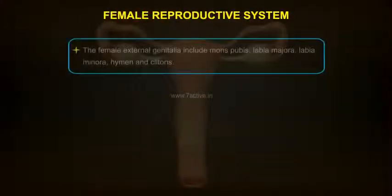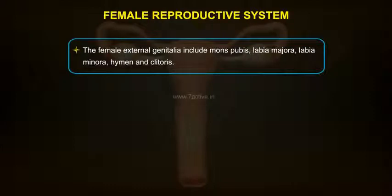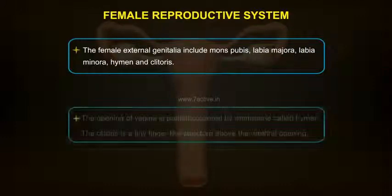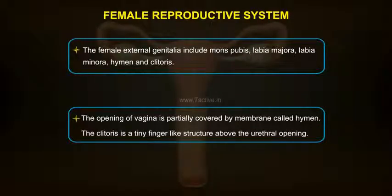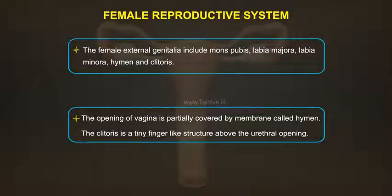The female external genitalia include the mons pubis, labia majora, labia minora, hymen, and clitoris. The opening of the vagina is partially covered by a membrane called the hymen. The clitoris is a tiny finger-like structure above the urethral opening.